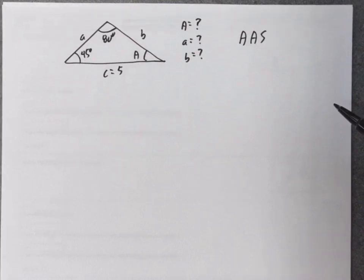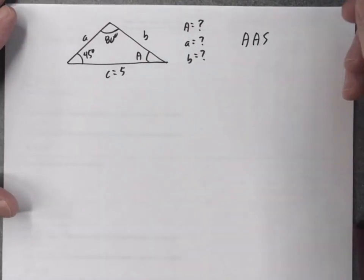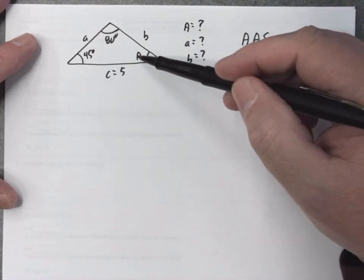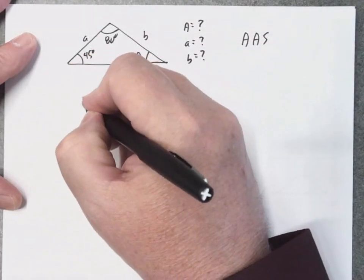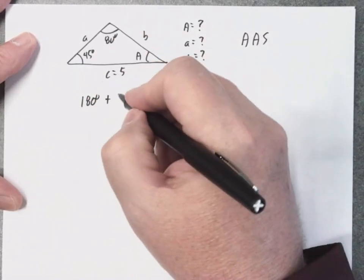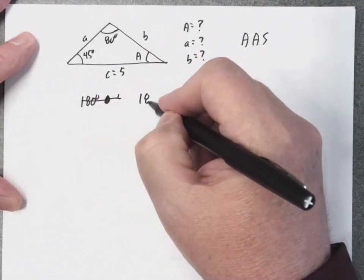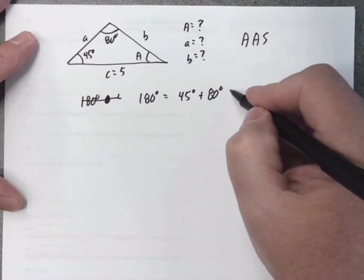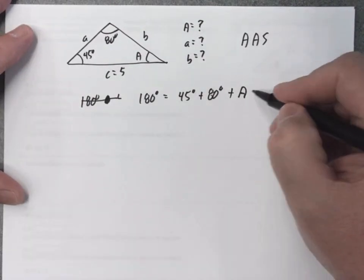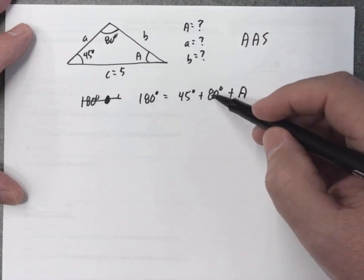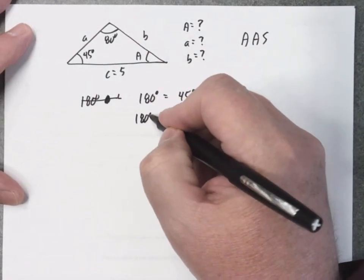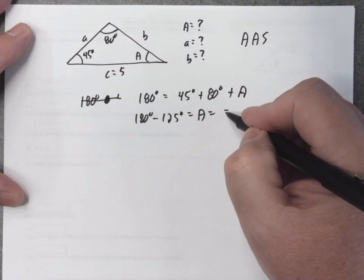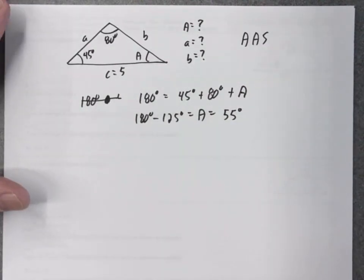Angle angle side is usually about the easiest problem to solve of all of these. First thing we do, because we know that the three angles of a triangle equal 180 degrees, if we know two of the angles, we can very easily find angle A. So if I add these three angles together, 45 degrees plus 80 degrees plus A equals 180. If I solve for A, 45 plus 80 is 125, so I subtract. Angle A should be 55 degrees.